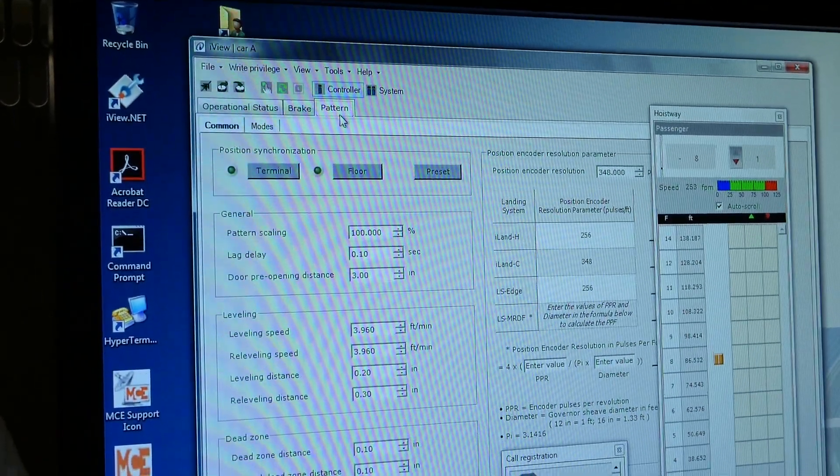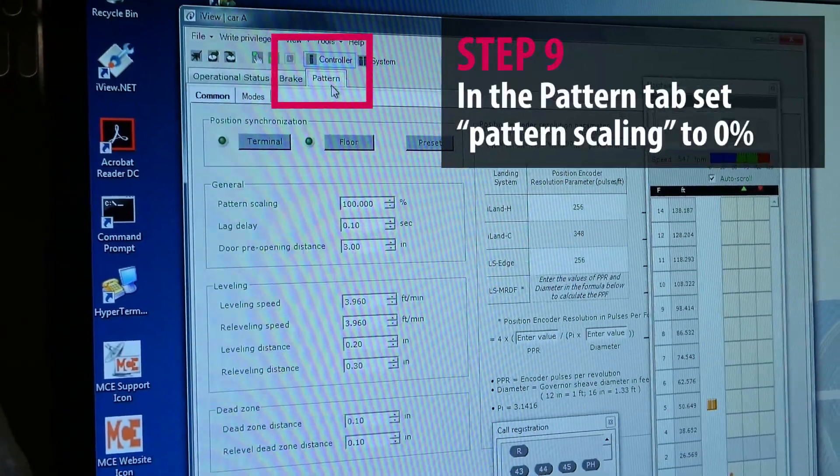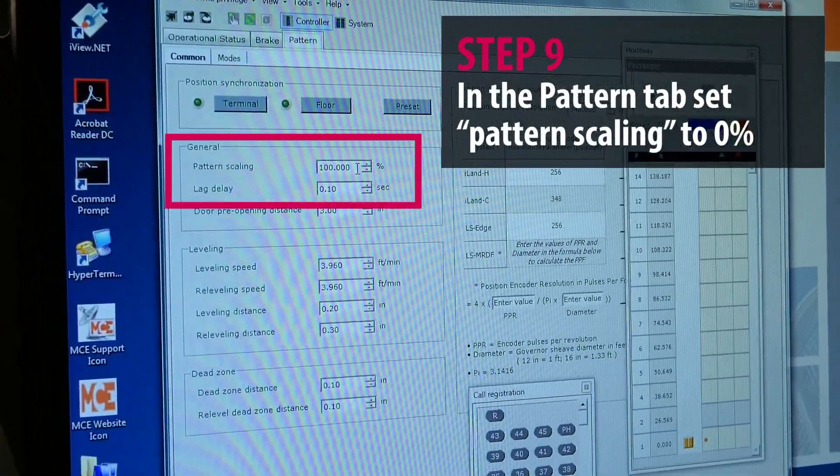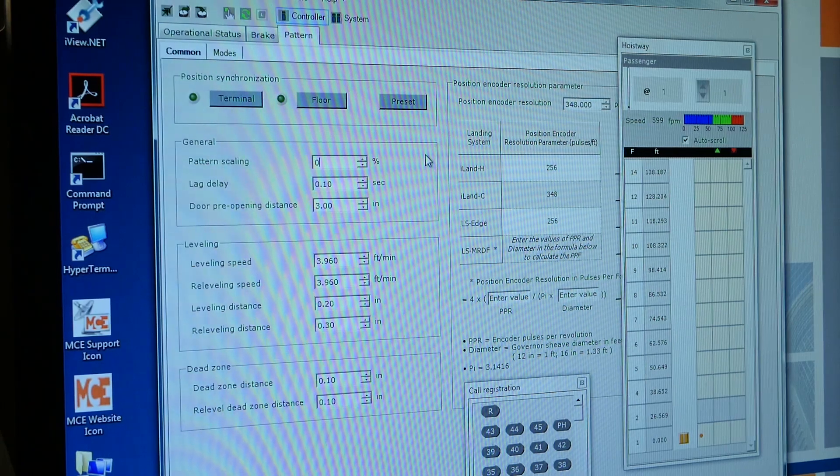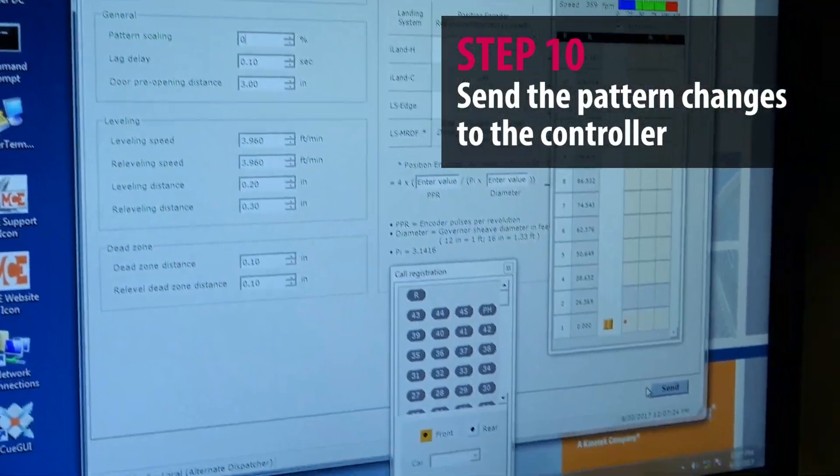To set the inspection speed to zero, we need to go to the pattern settings, go to pattern scaling, and set this to zero. To save those changes, we have to send them to the controller.